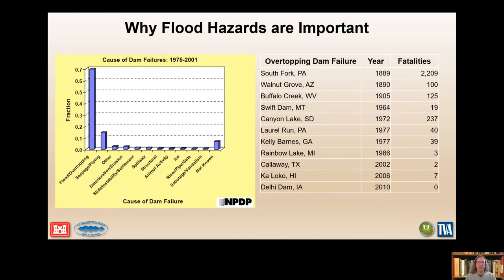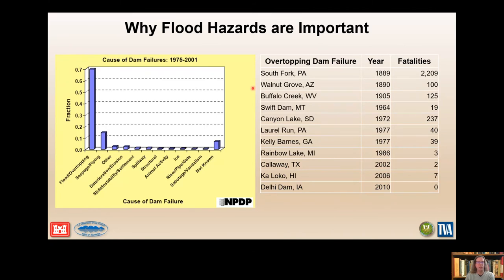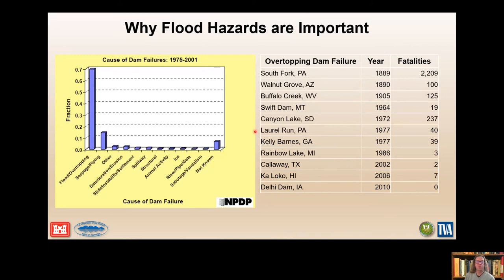A large fraction of dams, particularly embankments, have failed due to overtopping. Flood hazards are the key to estimating overtopping risks. Some dams that have failed from overtopping are listed in this table. Many of you may be familiar with the Johnstown Flood — South Fork Dam in Pennsylvania in 1889, where over 2,000 fatalities occurred — and several other famous cases: Buffalo Creek coal mine dam failure in West Virginia, a big flood in Montana in June 1964, Swift Dam, and Laurel Run in Pennsylvania.